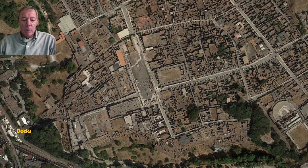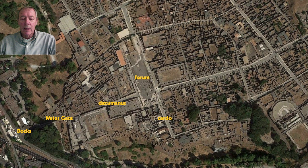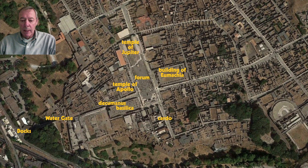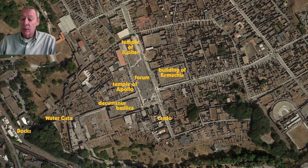Moving up into the city, we pass through what's called the Water Gate—the main gate—and then the decumanus, the east-west road, runs through the city with the cardo intersecting it on the north-south coordinate. Where they intersect is the main forum. On the forum you've got the main temple to Jupiter, a smaller temple to Apollo, a basilica—a large public building—some office buildings, and a variety of other structures.